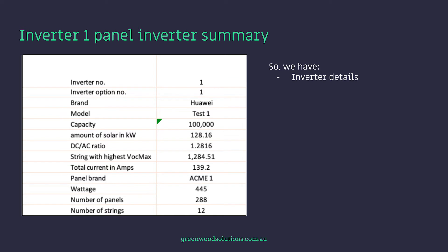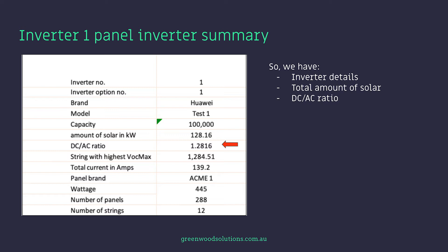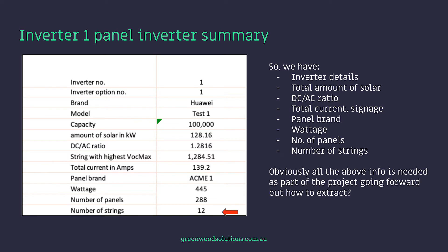So we have the inverter details, the total amount of solar, the DC ratio, the total current signage, the panel brand, the wattage, the number of panels, and the number of strings. All of the above info is needed as part of the project going forward, but how do you extract that?